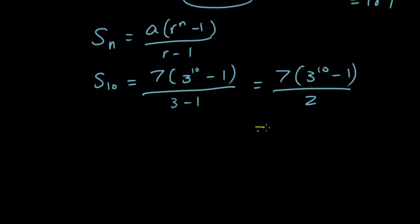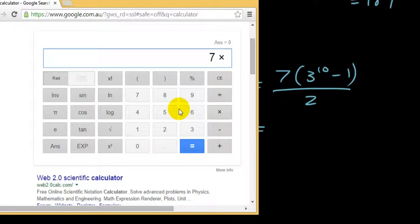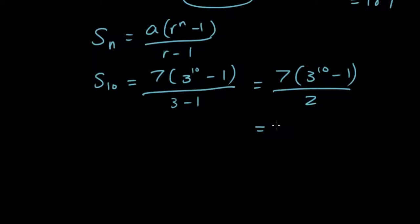And if you put that into our calculator, so that's 7 times 3 to the power of 10 minus 1, and then we divide that by 2. And we got 206,668.